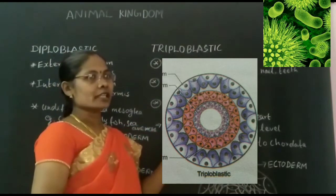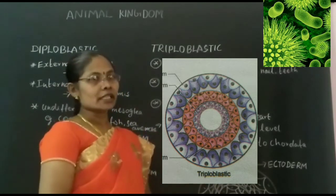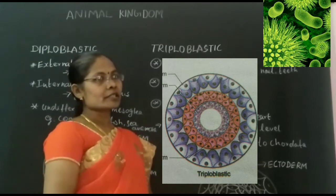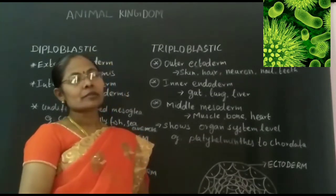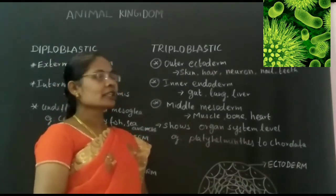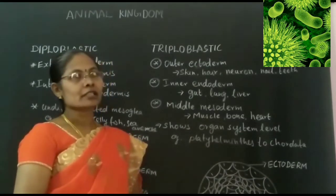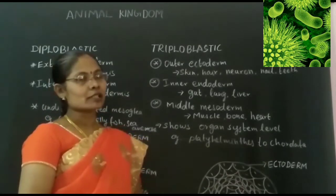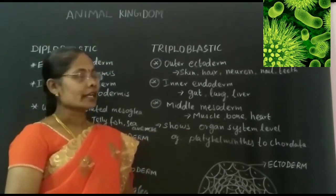When the embryo forms three layers — outer ectoderm, inner endoderm, and a middle mesoderm — these animals are called Triploblastic animals. The outer ectoderm gives rise to skin, neurons, and teeth. The inner endoderm forms into gut, lungs, and liver. And the middle mesoderm forms into muscle, bone, and related structures.